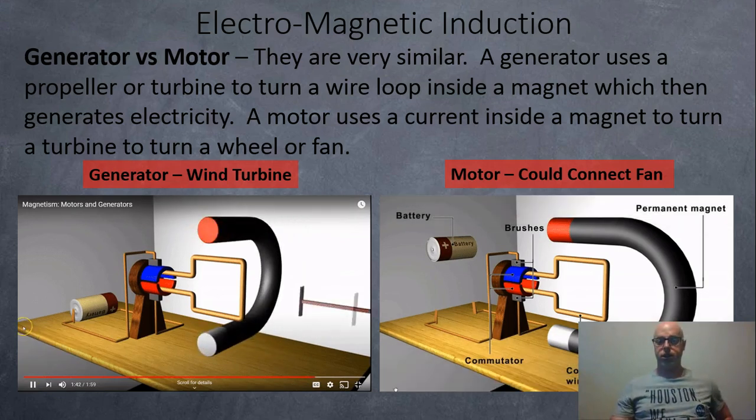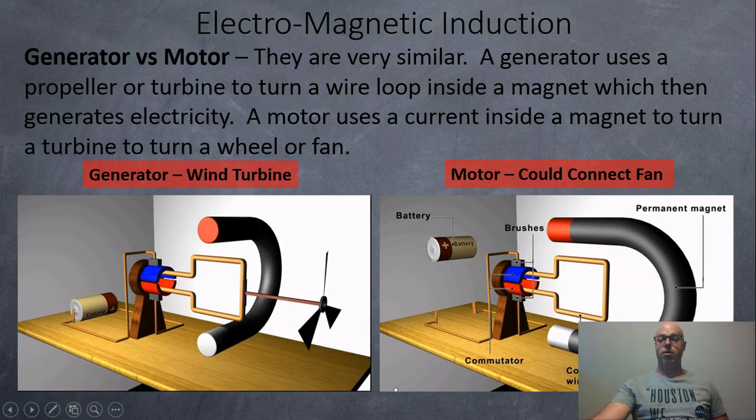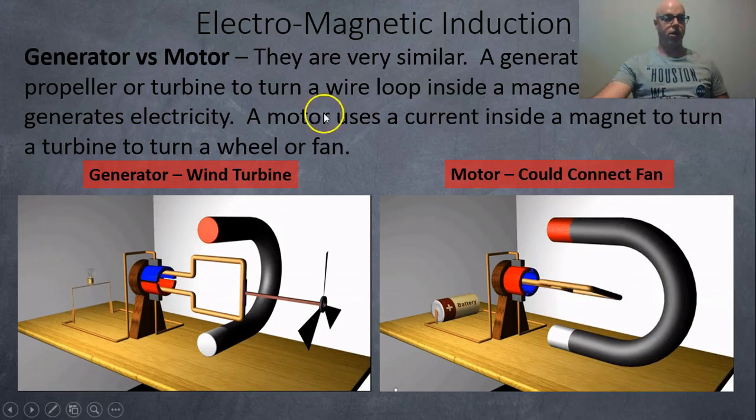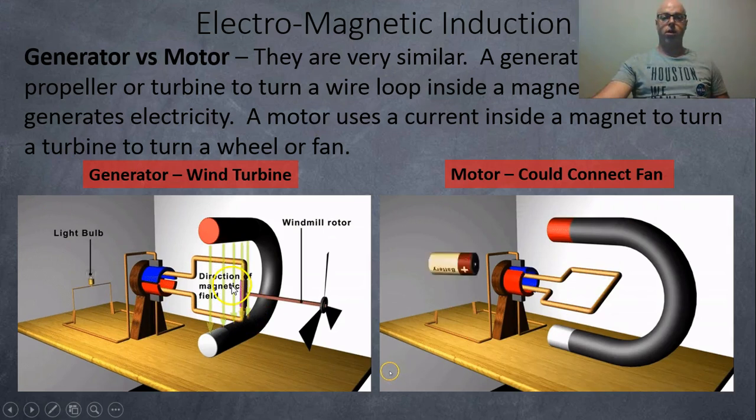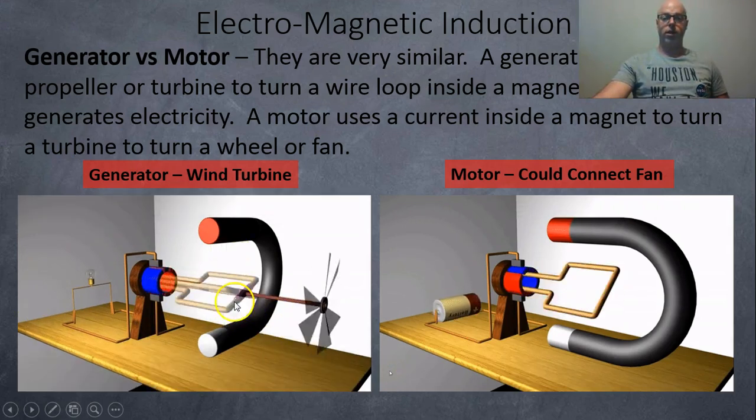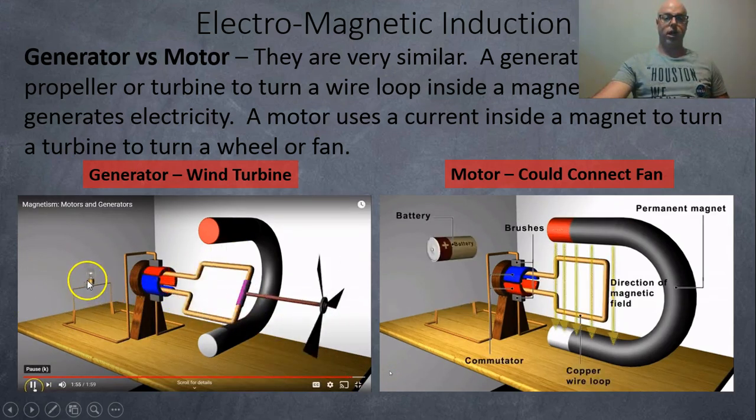So here's a couple of animations. You can take a look at the difference between a turbine and a generator. So here's how a generator works. Here we have the wind, it's turning the circuit, it's lighting up the light bulb.